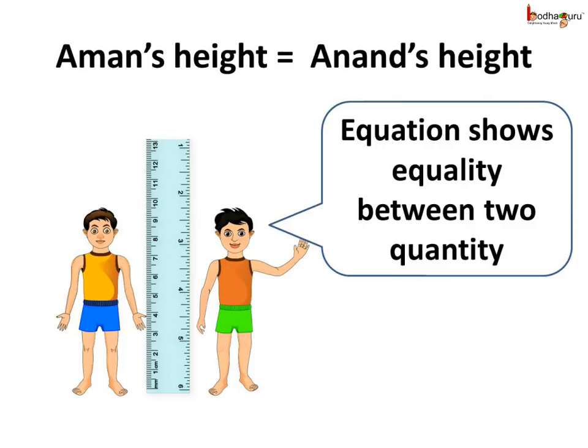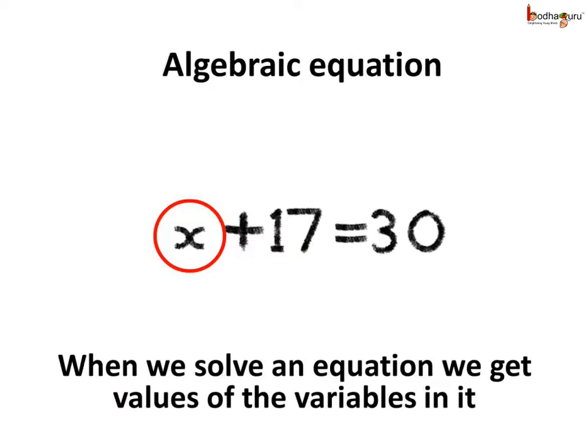If we say Amand's height is equal to Anand's height, that is their heights are equal, then it would be an equation as it shows the equality between the two quantities, that is Amand's height and Anand's height. Here, x plus 17 is equal to 30 is an algebraic equation which has a variable x.